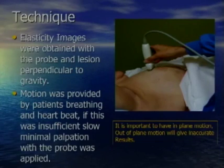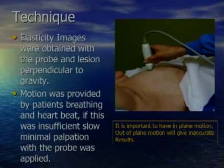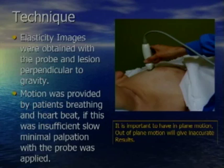The technique we use limits patient motion by keeping the probe and lesion perpendicular to gravity — we roll the patient so that the probe, lesion, and table are all in one straight line. We need very little motion, and we try to set it up so the patient's breathing and heartbeat causes the displacement, with that motion in line with the lesion and probe so the lesion moves up and down in the field of view rather than side to side. With some practice, you can acquire this technique very easily.